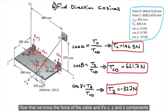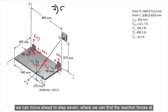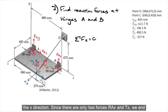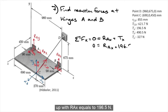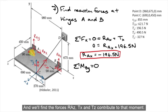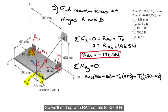Now that we know the force of the cable and its x, y, and z components, we move to step 7 to find the reaction forces at hinges A and B. Starting with the equilibrium equation in the x direction, since there are only two forces — RAx and Tx — we get RAx equals 196.5 newtons. Then taking the moment about the y-axis at hinge B, we find that RAz, Tx, and Tz contribute to that moment, giving us RAz equals negative 37.9 newtons.